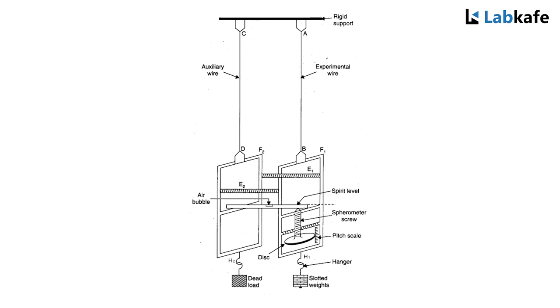The experimental wire AB can be loaded by adding slotted weights on the hanger. When additional loads are applied or removed, the experimental wire extends or contracts. That disturbs the spirit level. Then, by adjusting the spherometer screw or micrometer screw, the spirit level is restored to its initial position. From the amount of rotation of the micrometer screw, we get the elongation.